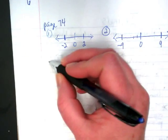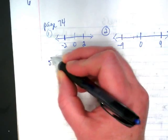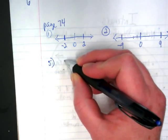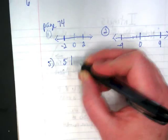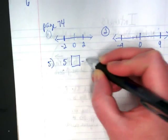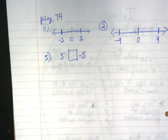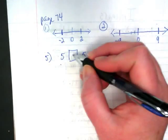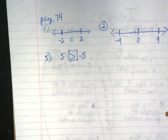Let's skip down and look at number five now. Five is comparing two numbers, and we've done some problems like this with our entry tasks already. We're comparing five and negative five. Which of those two numbers is smaller? The negative five. So we're going to show that five is greater than negative five.